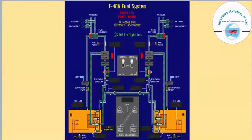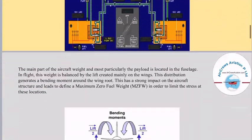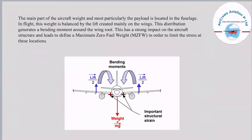The main part of the aircraft weight, and most particularly the payload, is located in the fuselage. In flight, this weight is balanced by the lift created mainly on the wings. The distribution generates bending movement around the wing root, which has a strong impact on the aircraft structure and leads to defining a maximum zero fuel weight in order to limit the stress at these load locations.